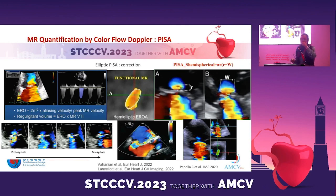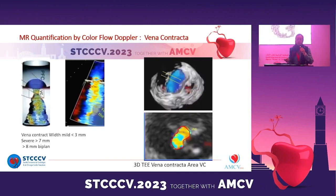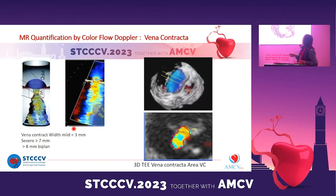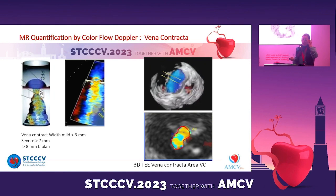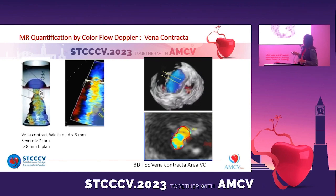3D echocardiography can evaluate the EROA more accurately. Another qualitative parameter is the Vena Contracta — the narrowest jet. When its width is less than 3 mm, it is mild MR. New guidelines recommend making the measurement in biplane, in two-chamber and three-chamber views. When it is more than 8 mm, it is severe MR. In 3D echocardiography, the Vena Contracta is also not circular, so the width is not uniform. Some studies have measured the area, but we do not yet have cutoffs for Vena Contracta area in 3D.